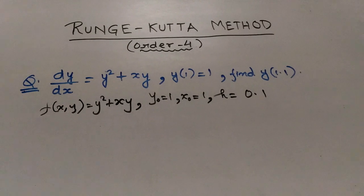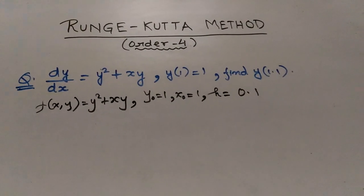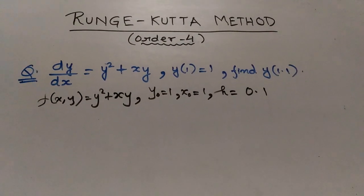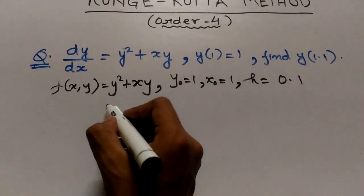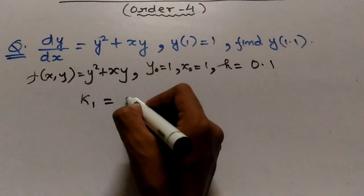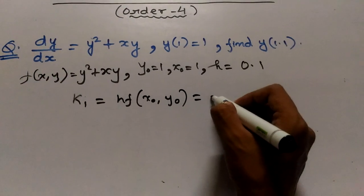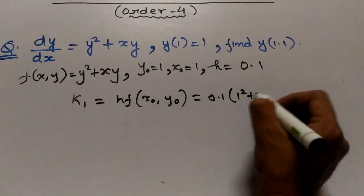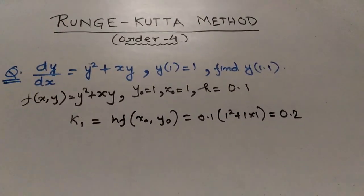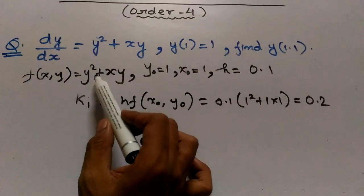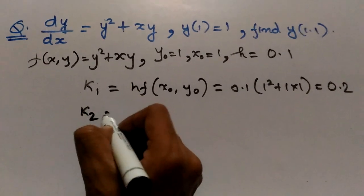Now we will calculate k1, k2, k3, k4, and finally y at x equals 1.1. The value of k1 is h into f(x_0, y_0), which is 0.1 into (1² + 1×1), giving k1 equals 0.2. Similarly, k2 will be h into f(x_0 + h/2, y_0 + k1/2).